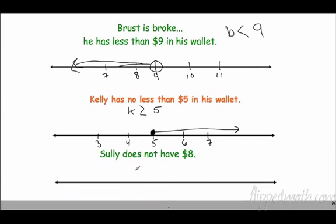Alright, let's try the last one. Sully does not have $8. So we know our boundary is going to be $8. 8, 9, 10, 7, 6. Alright, we know he doesn't have 8, so we're not including it. Could he have 7? Yes. That means he could have everything on this side. Could he have 9? Yes. In fact, he could have anything except for $8. So Sully does not have, does not equal $8.